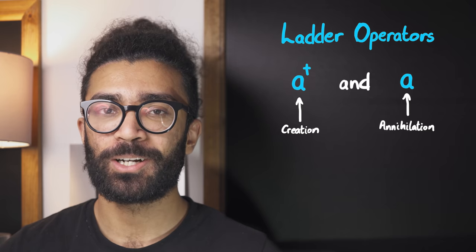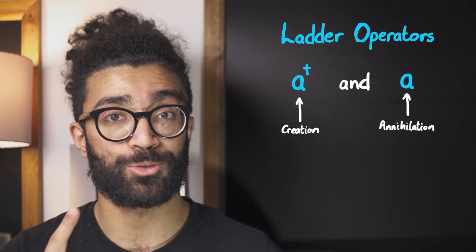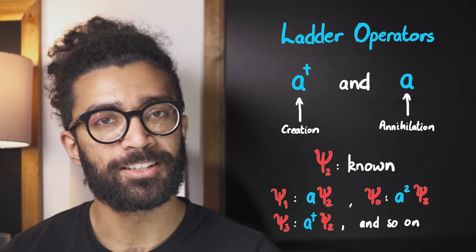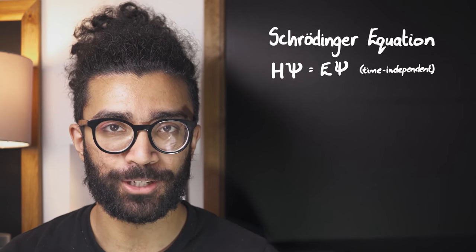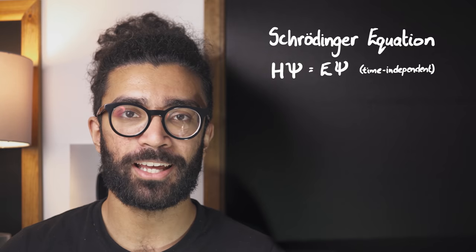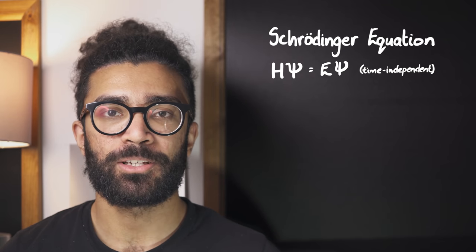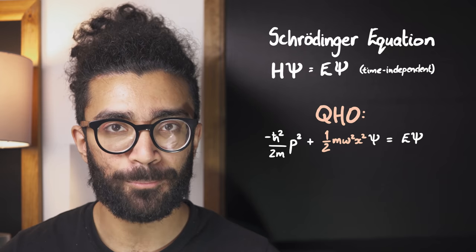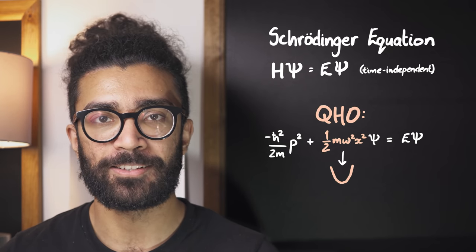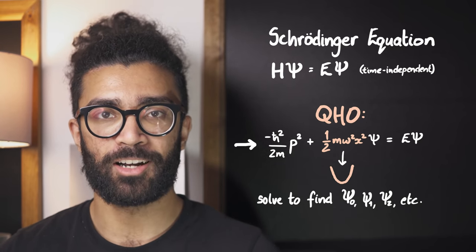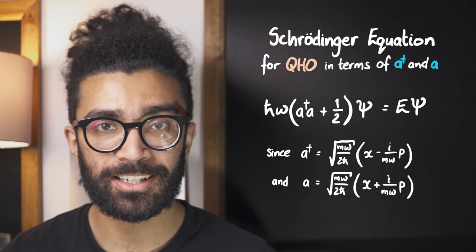Now at this point, it might seem like the creation and annihilation operators sound a lot cooler than they actually are. But here's the thing — being able to work out what any of the allowed wave functions are for our system, given just one of them, is super powerful. And these operators can do a little bit more as well. To see this, we first need to take a look at the Schrödinger equation very briefly. This is the main equation of quantum mechanics — the governing equation — it tells us how wave functions change and evolve over time. Whenever we're studying any quantum system, we essentially adapt the Schrödinger equation to fit our system and then solve it to learn something about that system.